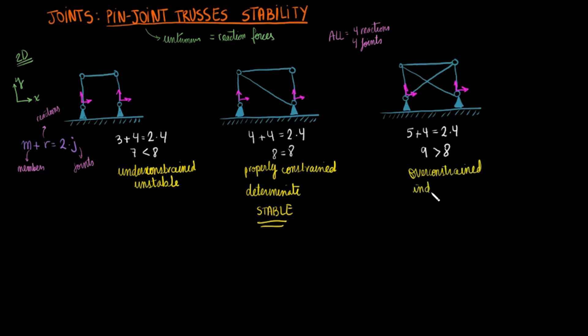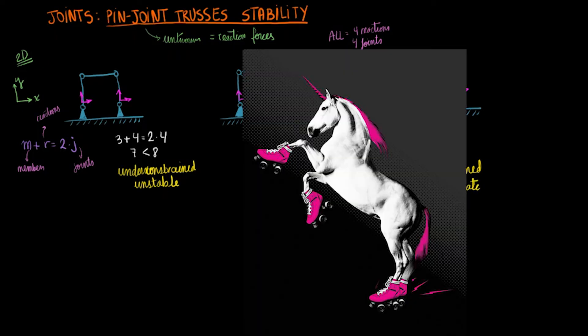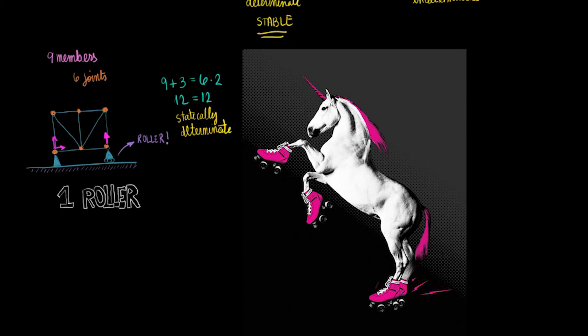Although these systems have been fixed to the ground, we can also add rollers to them. Rollers will allow these systems to slide and reduce the number of reaction forces in the system. This system, for example, has three reaction forces: two from the fixed point and one from the roller. Note that since the roller can roll along the x-direction, we will not have a reaction force along the x-axis. We can count nine members and six joints. Since we get the equality to work out, this system is statically determinate.